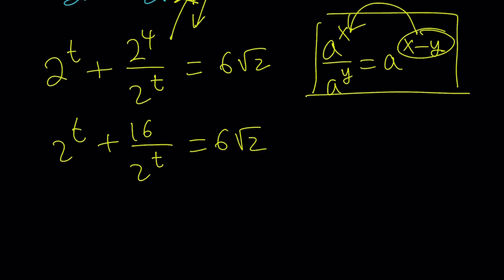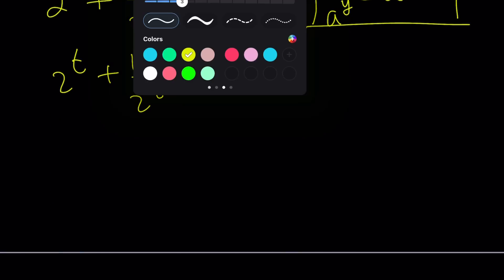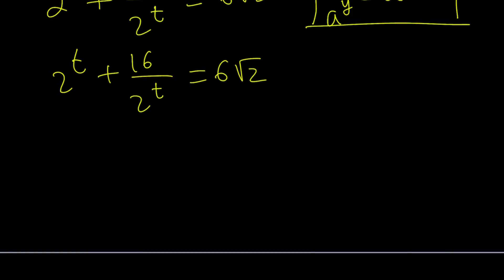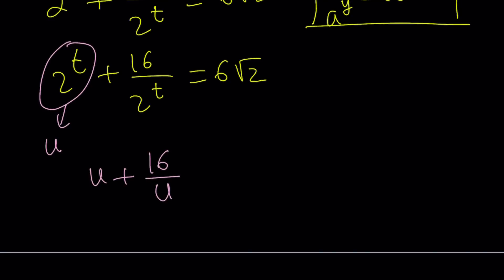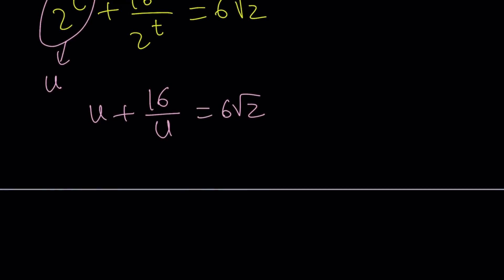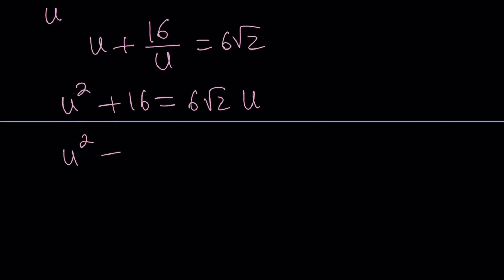Notice that 2^t repeats, so we use substitution again — substitution within substitution. Let's call 2^t equal to u. Then we get u plus 16/u equals 6√2. This is much, much better than the original equation. After multiplying both sides by u, we get a quadratic in u, and we can put everything on the same side to get a full quadratic.